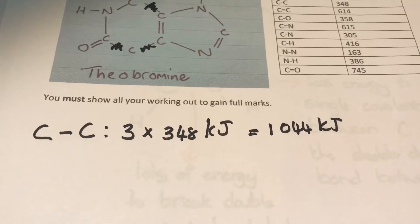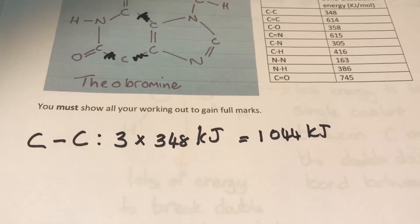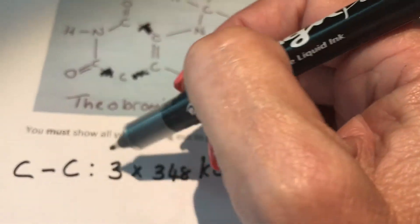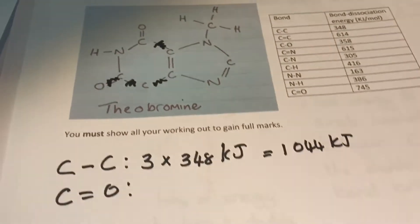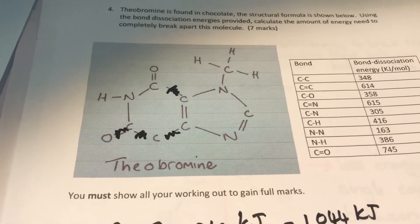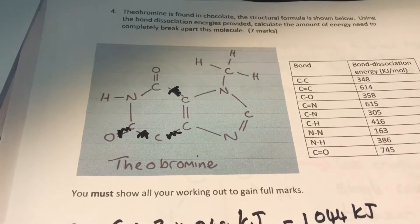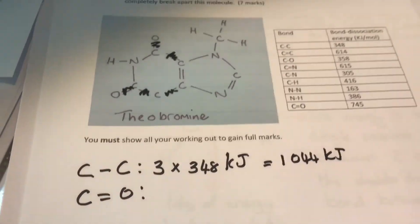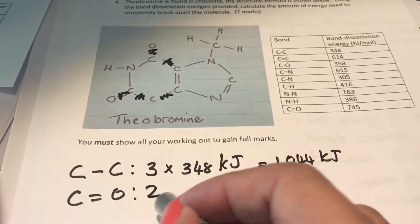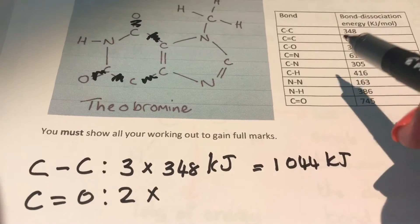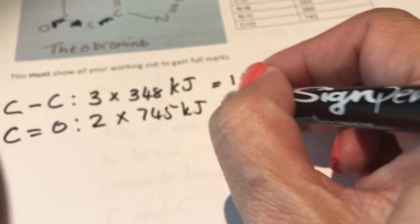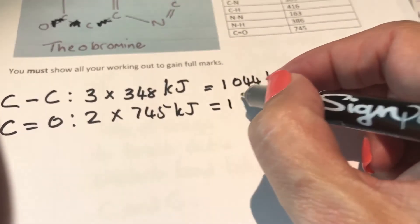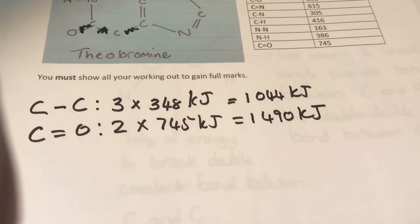Now I need to find the other bonds that are involved. The next one that I see right in front of me is a carbon double bond oxygen. I will mark this one off, and then I'll look and see if there's any more carbon double bond oxygen bonds. I see that there's another one at the top, so I will mark it off. I don't see any more, which means I have two carbon double bond oxygen bonds. I look at the table: carbon double bond oxygen is 745 kilojoules, so it's 2 × 745 kilojoules. If I multiply that it's 1490 kilojoules.